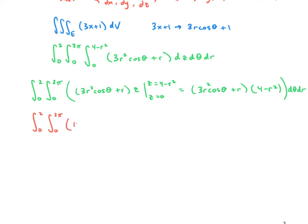It makes sense to distribute this. So we get 12r squared cosine theta plus 4r minus 3r to the fourth cosine theta, and then minus r cubed, d theta dr. Our next antiderivative will be in terms of theta. I'll pause and write that one out as well.